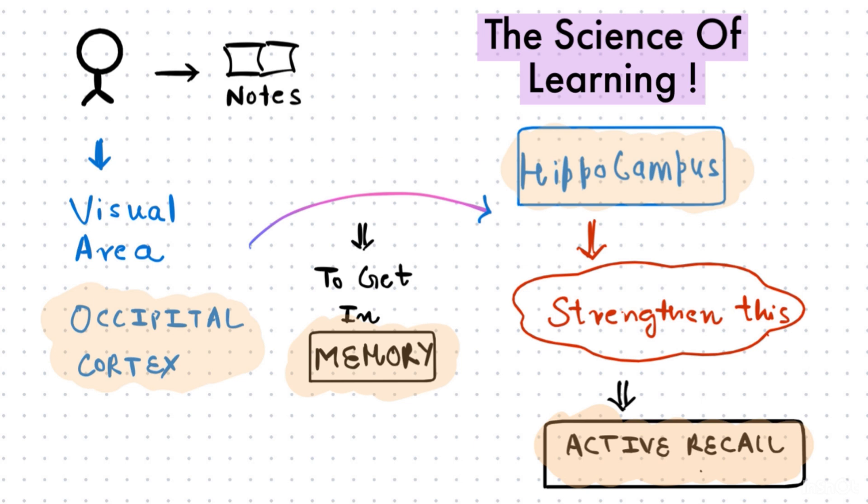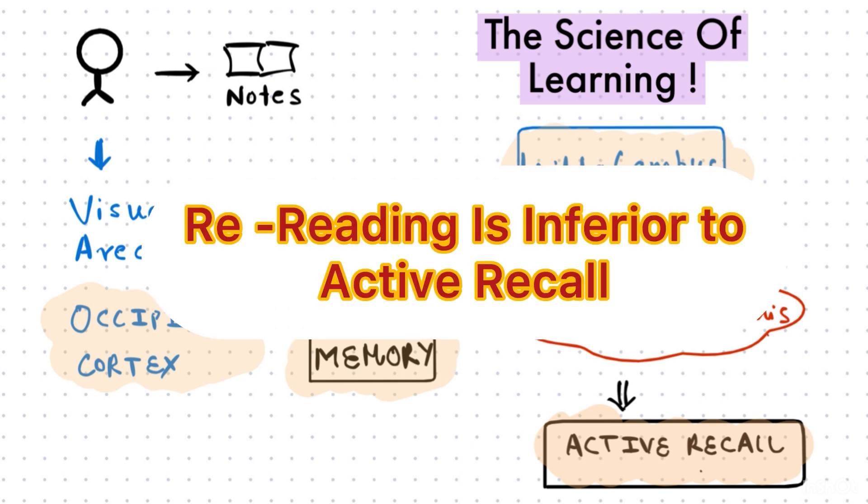As you know, we stimulate our muscle growth by doing exercises. Similarly, the best way to develop strong memory is by stimulating the hippocampus. Now how do you do that? The answer is active recall. Reading notes will stimulate visual areas of the brain but the hippocampus will not be effectively stimulated. That is why re-reading is inferior to active recall.